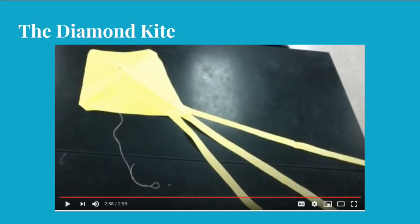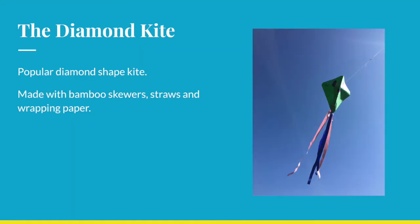When you picture a kite in your mind, you're probably picturing a diamond kite. A diamond kite is built on a frame made of bamboo skewers, straws, and butcher paper or wrapping paper. One benefit is it has a large surface area for you to decorate and personalize. One disadvantage is it does require more moderate wind speeds to fly.